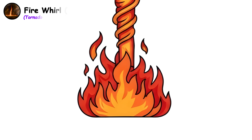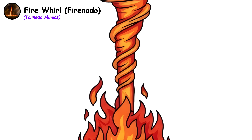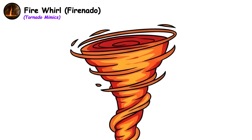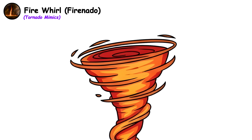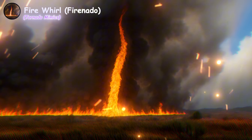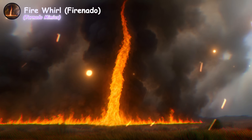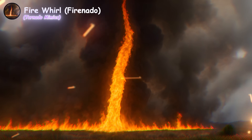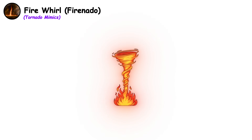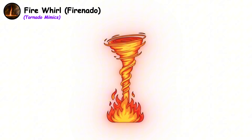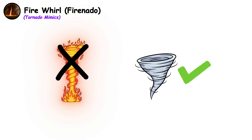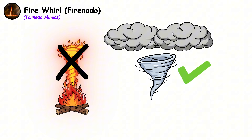Fire whirl. These are made entirely of flames spiraling hundreds of feet into the air. Fire tornadoes, or fire whirls, form when intense heat from wildfires creates powerful updrafts that begin rotating. The spinning vortex pulls flames and hot gases into a terrifying column of fire. They aren't true tornadoes because they're driven by heat rather than atmospheric dynamics.